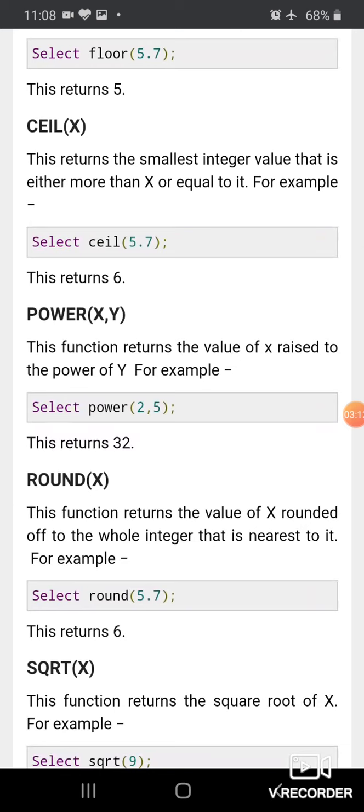ROUND(X) - this function returns the value of X rounded off to the whole number that is nearest to it. SELECT ROUND(5.7) returns 6.